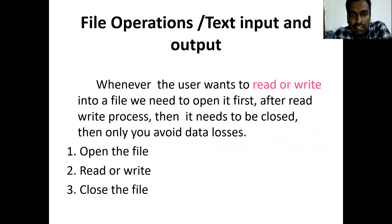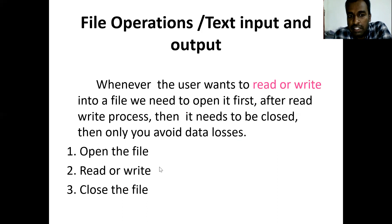Next is file operations. We have some file operations. We want to read or write into the file. First, we want to open the file. After the read or write process, the file needs to be closed — only then do we avoid data loss. The first process is: open the file, then read or write the data into the file, and after reading or writing, close the file. These are the operations.